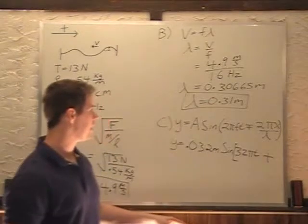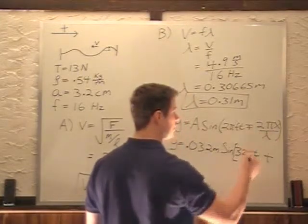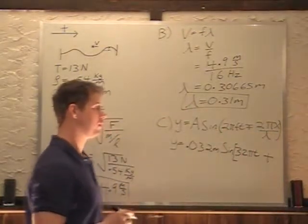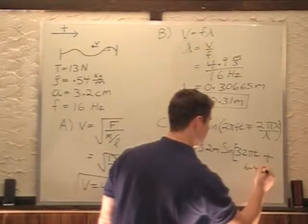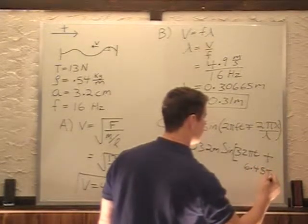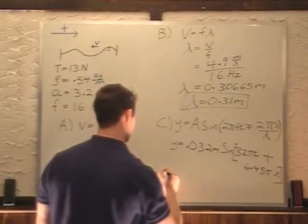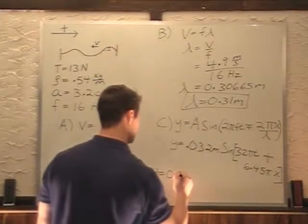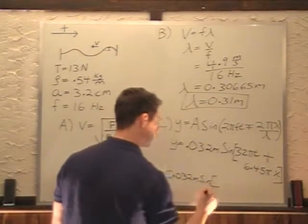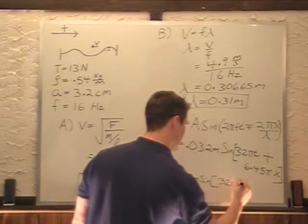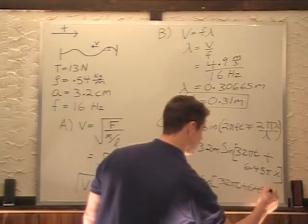Now, I'm going to use the plus because we're going in the negative direction. So we use the plus. 2 pi. Actually, I'm going to divide this lambda into this 2. So our wavelength is 0.31. Divide that into our 2, and we get 6.45 pi x. So if I write that so we can get it all in one line: Y equals 0.032 meters sine 32 pi t plus 6.45 pi x. So this is your final answer for C.